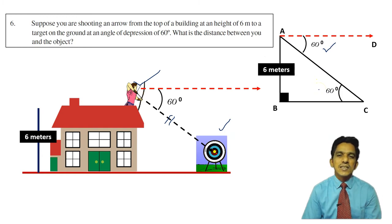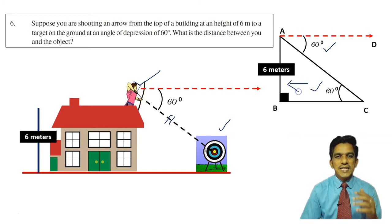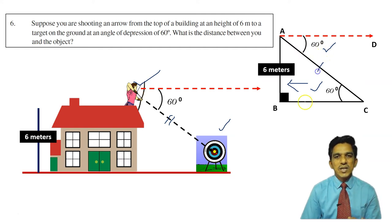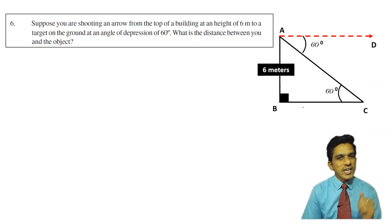The angle of depression in triangle ABC — angle C is equal to the angle of depression because they are alternate and interior angles. So in triangle ABC we have angle 60 degrees, and the height of the building AB is opposite to the angle. AC is the hypotenuse. Since we have opposite and hypotenuse, the relevant trigonometric ratio is sine. You can use cosecant also.